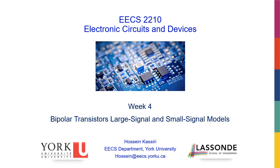Let's go ahead and get started. Hello everyone and welcome back to ECS 2210. Last week we started introducing bipolar junction transistors and discussed how the transistor is made, how it works, and why it has certain current-voltage characteristics. This week we are going to continue our discussions on bipolar transistors and talk about two important topics: large signal and small signal models of a bipolar transistor.